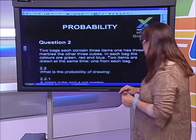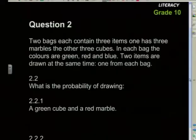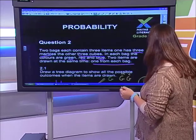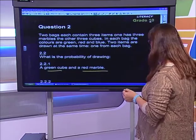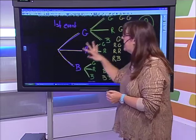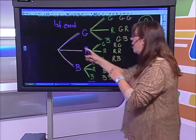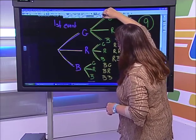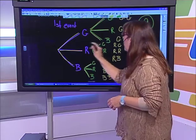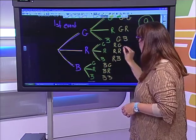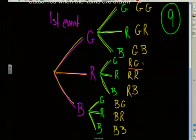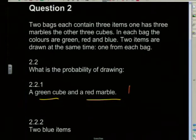Let's move on to the next part of the question: what is the probability of drawing a green cube and a red marble? I've already done all my possible outcomes. Going back to the tree diagram, I want a green cube and a red marble. I look for the red marble branch and then find the green cube branch from it — there's only one such outcome. So the probability is one out of nine.